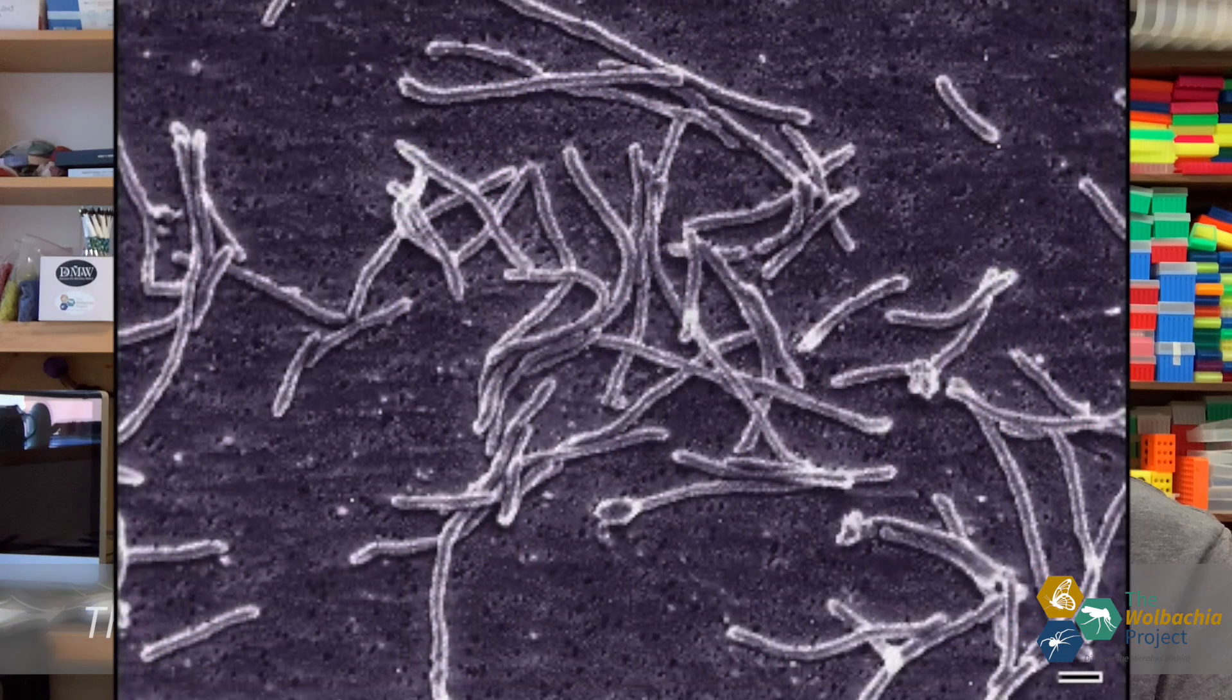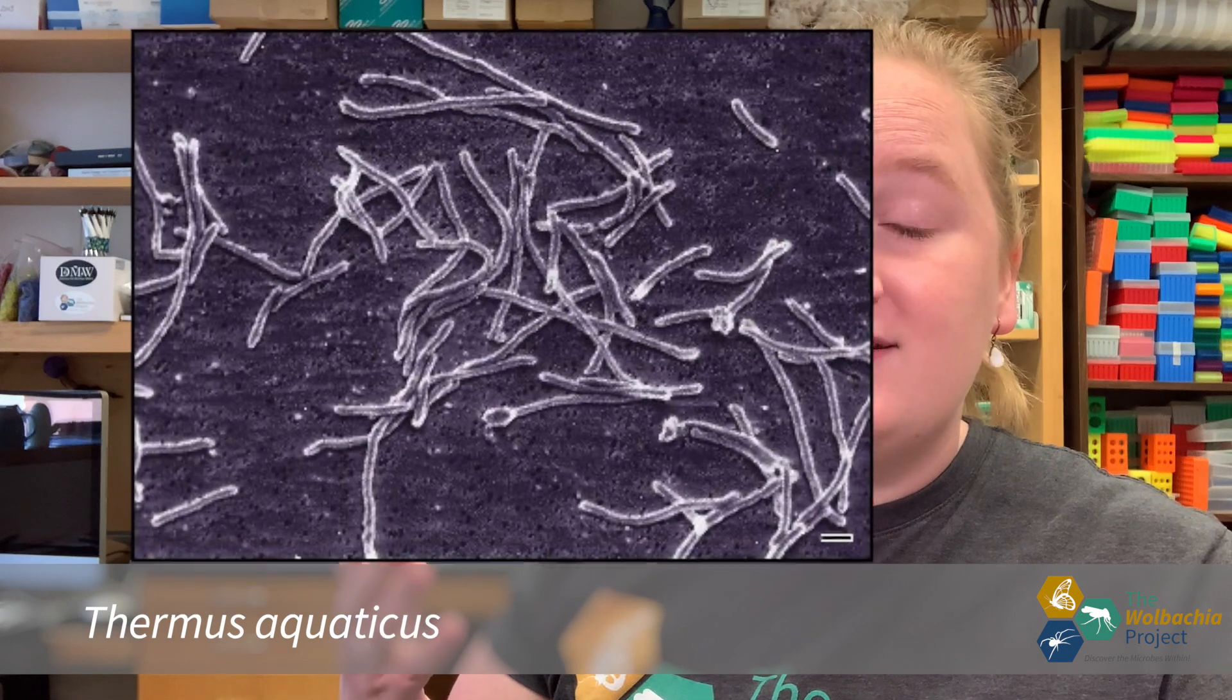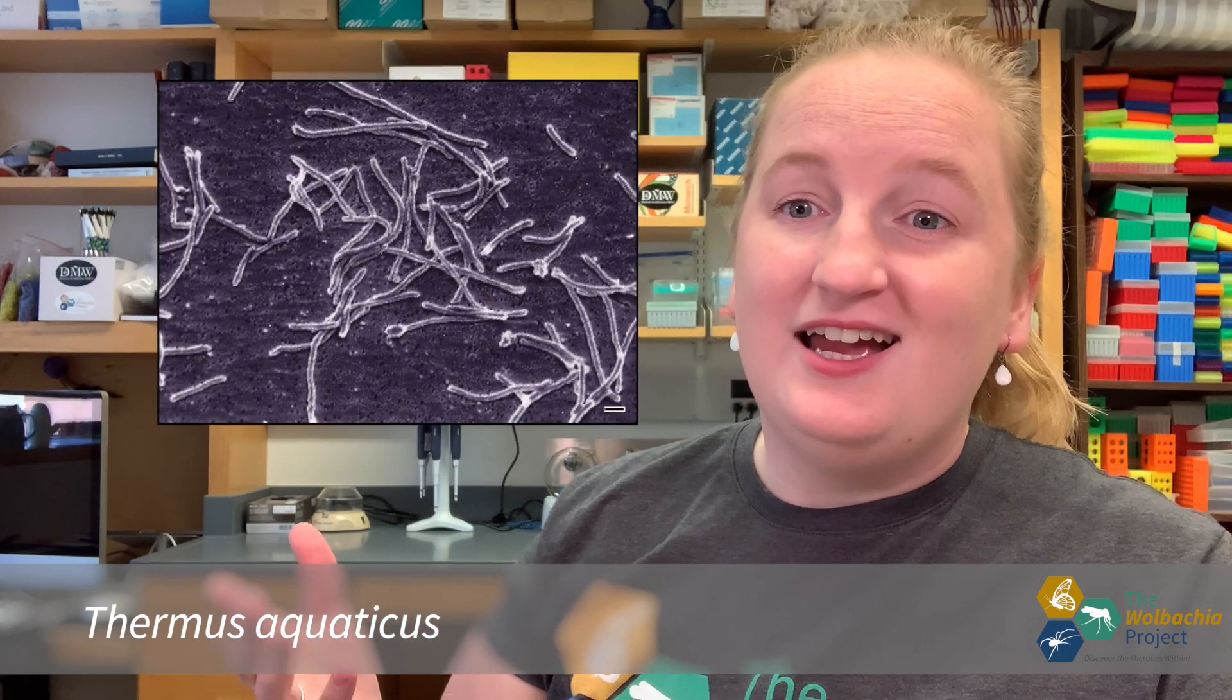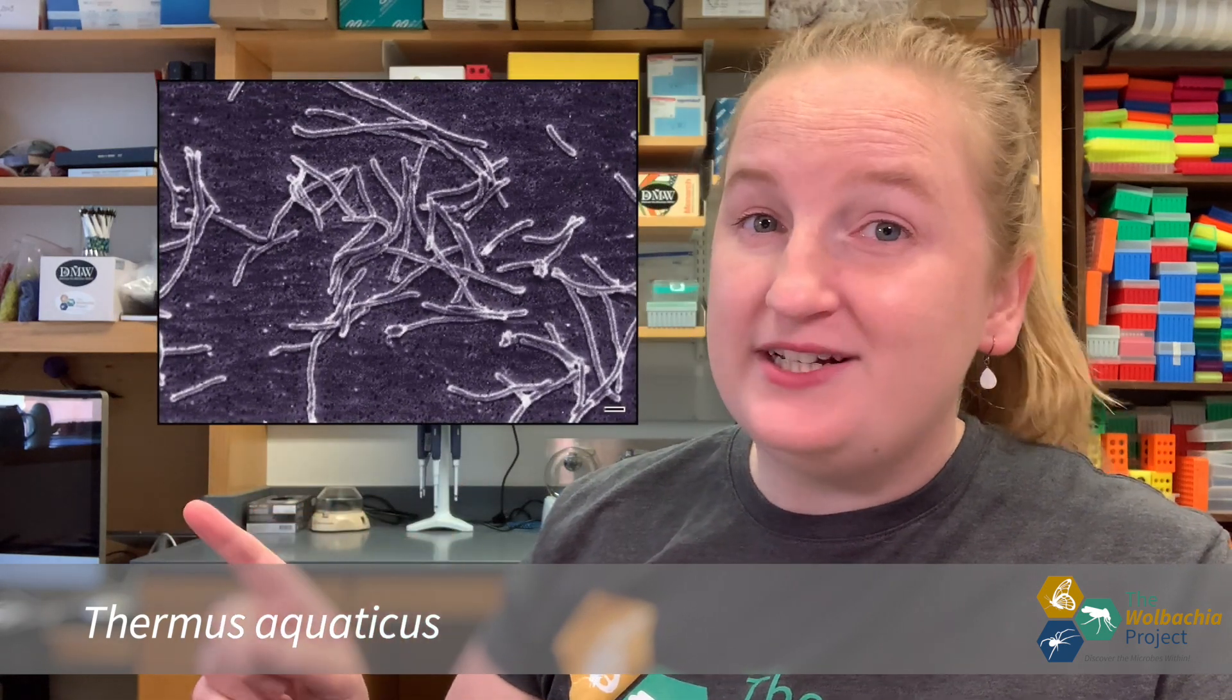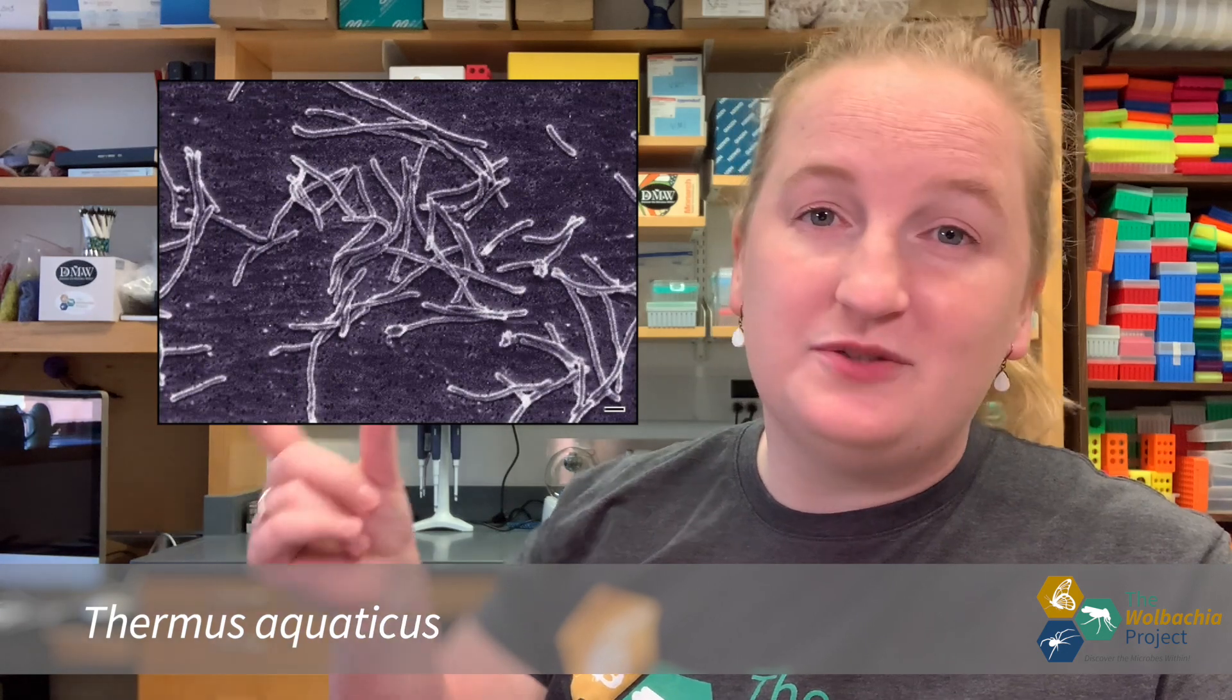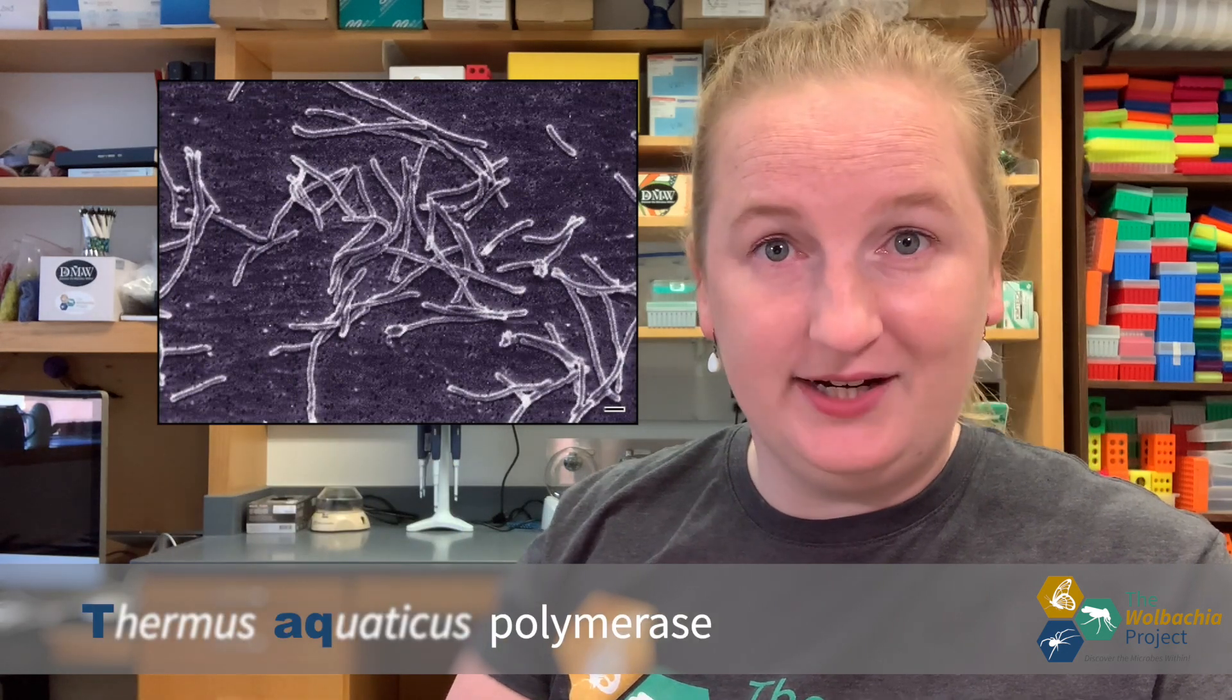94 degrees Celsius is really hot. It's almost boiling. There's no DNA polymerase in your body that would be able to work at that temperature. So instead, we're going to use a DNA polymerase that was discovered from the hot springs at Yellowstone National Park. This DNA polymerase was discovered from the bacteria Thermus aquaticus. And this heat-stable DNA polymerase extracted from it has now just been shortened to tac polymerase.